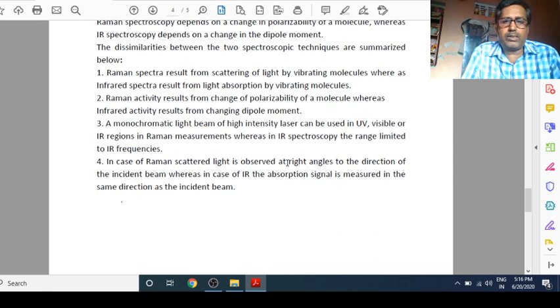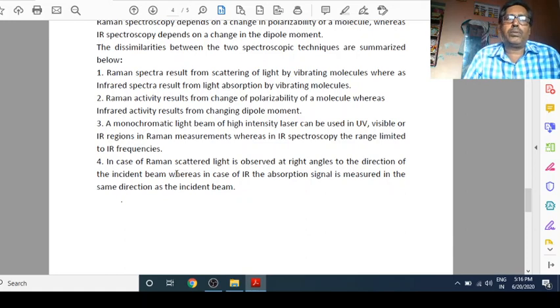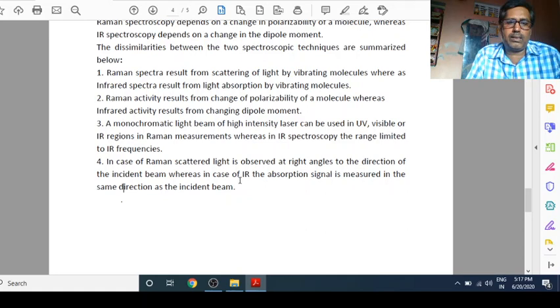In case of Raman scattered light is observed at right angles to the direction of the incident wave. As I told you earlier that we get, when you observe the spectrum, you will get few lines having original wavelength of the original light, and there are other lines also whose wavelengths more than or less than. It is viewed when you put your eye normal, in normal position. But in case of IR infrared, the absorption signal is measured in the same direction as the incident. So there is a role of direction here, how to observe. I hope you have understood this video. Thank you.